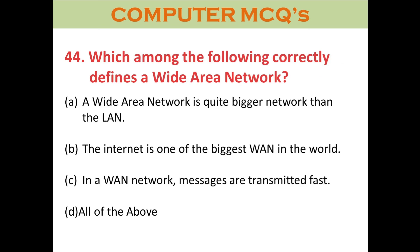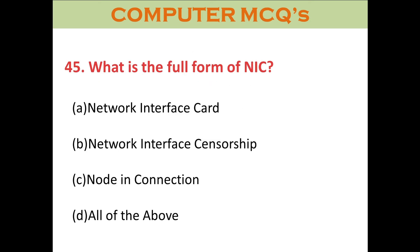Question forty-four: Which among the following correctly describes a Wide Area Network? A. WAN is a bigger network than LAN. B. The internet is one of the biggest WANs in the world. C. A WAN network measures transmitted fast. D. All of the above. The right answer is all of the above.